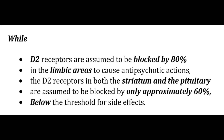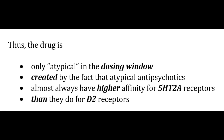Therefore, while D2 receptors are assumed to be blocked by 80% in the limbic areas to cause antipsychotic actions, the D2 receptors in both the striatum and the pituitary are assumed to be blocked by only approximately 60% — below the threshold of side effects. And thus, the drug is only atypical in the dosing window created by the fact that atypical antipsychotics almost always have higher affinity for 5HT2A receptors than they do for D2 receptors.